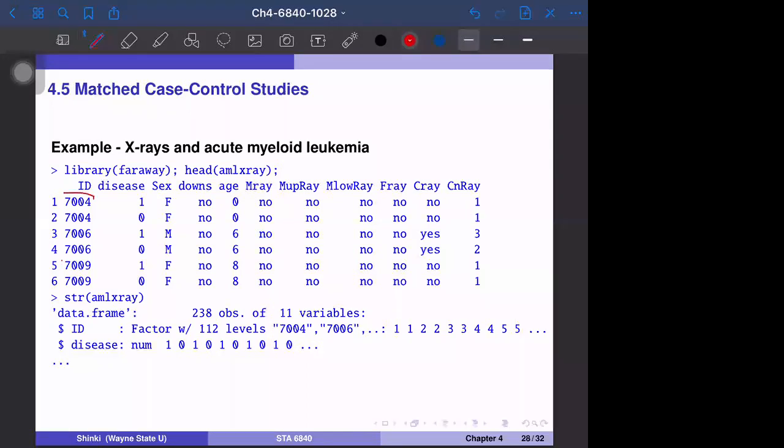Subgroups are indicated by this ID, and in each subgroup we only have one case. Some subgroups have a sample size of 3. We have 112 subgroups and 238 observations. Disease is y and the other variables are candidates for x.